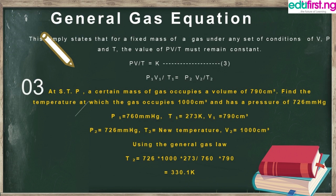Now the General Gas Equation. It states that for a fixed mass of gas under any set of conditions, the value of PV/T must remain constant. The General Gas Equation gives us the relationship between pressure, volume, and temperature: PV/T = k, or P₁V₁/T₁ = P₂V₂/T₂. It is the result of merging Boyle's Law and Charles' Law.